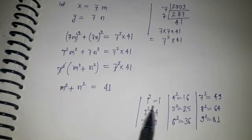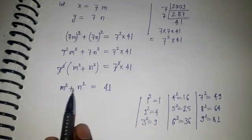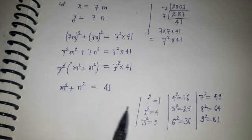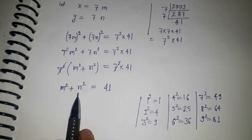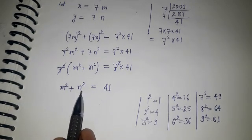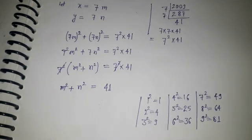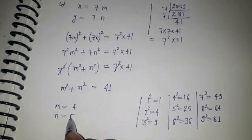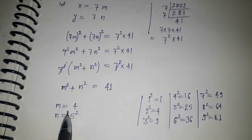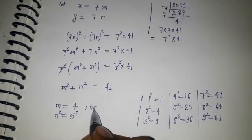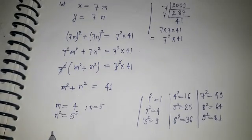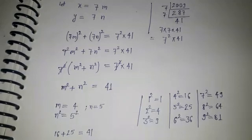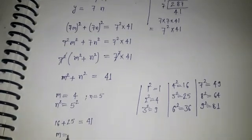If m equals 1 and n equals 1, then 1 plus 1 is not 41 — does not work. If m equals 2, then 4 plus 4 is also not 41. Now taking m equal to 4 and n equal to 5: m squared is 16 and n squared is 25, and 16 plus 25 equals 41. This satisfies the equation, so m equals 4 and n equals 5.